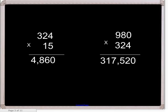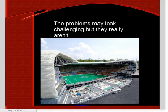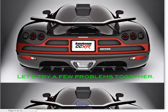Here are some example problems. 324 times 15 equals 4,860. 980 times 324 equals 317,520. The problems may look challenging, but they really aren't. Let's try a few problems together.